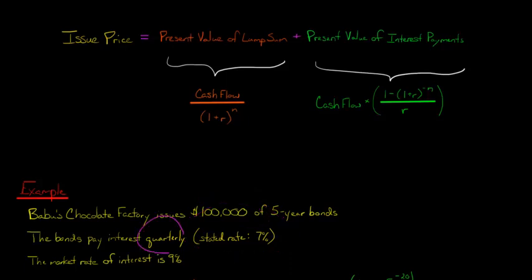However, the bonds are going to pay interest on a quarterly basis, so we need to adjust this interest rate. It's not just going to be $7,000 a year in interest. It's going to be $7,000 divided by four because it's four payments, so that's going to be $1,750. That's going to be our quarterly interest payment that Babu's Chocolate Factory has to make.